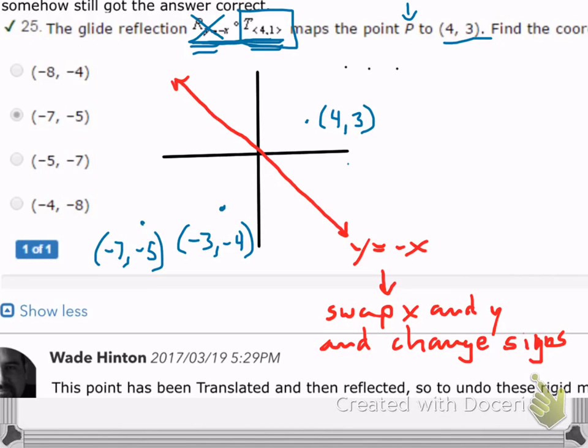So if you looked at that in reverse, if we just wanted to do this again just to check it, we would translate it right 4 and up 1, and that would take us to the point (-3, 4). If we went right 4 and up 1, it's going to take us right there. And then if we reflect that across y equals negative x, we would swap the values, change their signs, and that would take us right back to (4, 3). So the transformation that we've done here is correct.